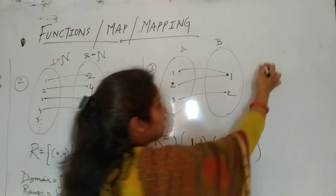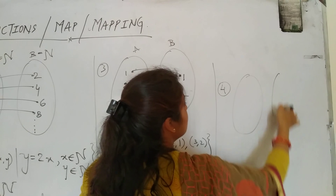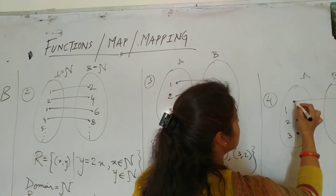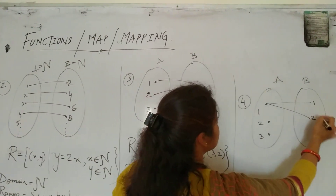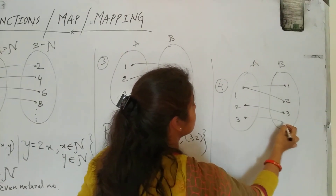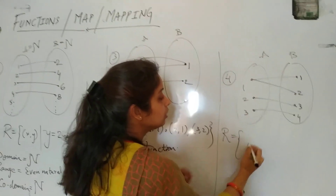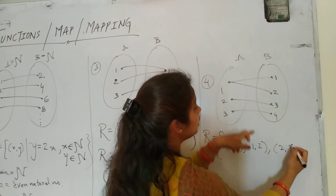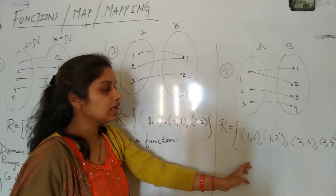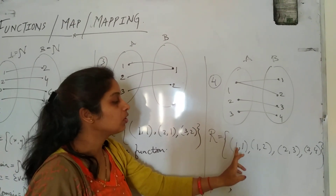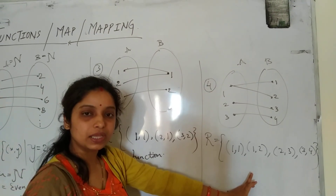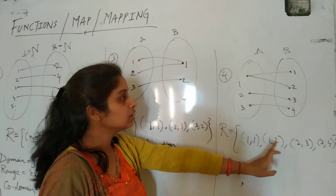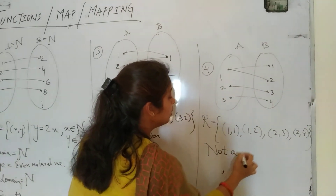But if we take another example — Example 4 — in which set A has elements 1, 2, 3 and element 1 has two images. So element 1 has image 1 and also image 2, then 2 has image 3, and 3's image is 4. In this case, this relation R is not a function because element 1 has two different images. According to the definition of function, each element in set A must have a unique image in set B. So this is not a function.